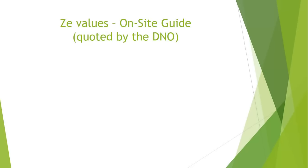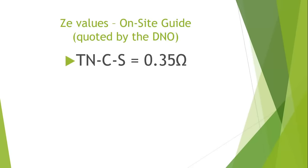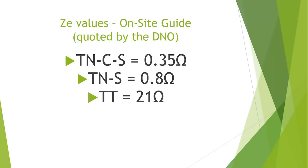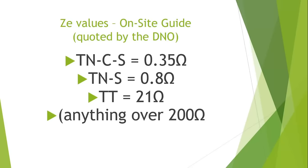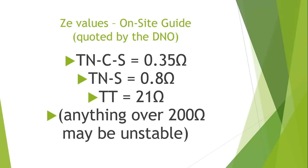The values quoted in the on-site guide by the distribution network operator are as follows. For a TNCS earthing system, we need a maximum ZE of no greater than 0.35 ohms. For a TNS system, the maximum value of ZE is 0.8 ohms. For a TT system with an earth rod, they recommend 21 ohms, but they can vary. The on-site guide says that anything over 200 ohms may be unstable, so a TT ZE is going to vary.